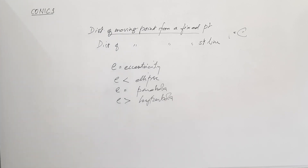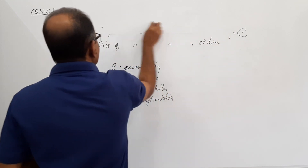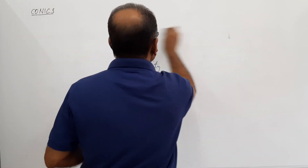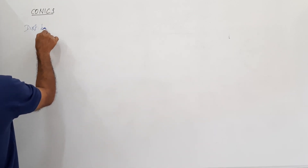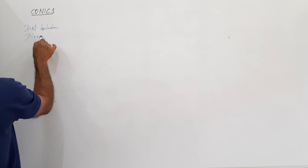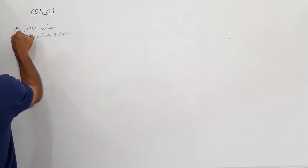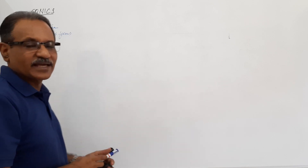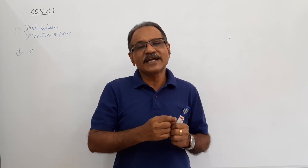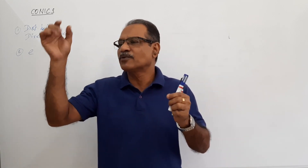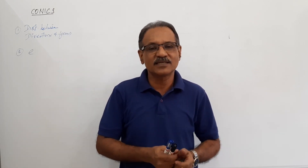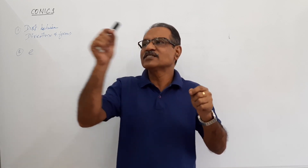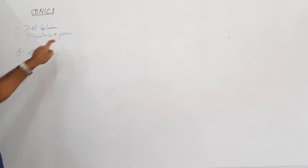Now we are going to learn a technique or procedure to draw a curve when certain things are given — a common procedure. The things given are: distance between directrix and focus, and eccentricity. The fixed point is called the focus and the fixed straight line is called the directrix. We will learn how to draw a conic when the distance between the directrix and focus is given and the eccentricity is given.